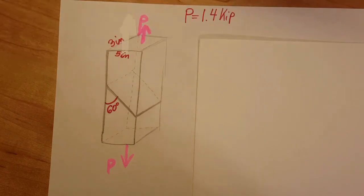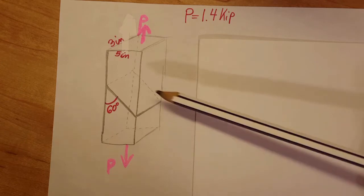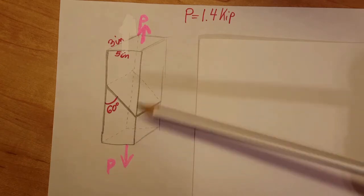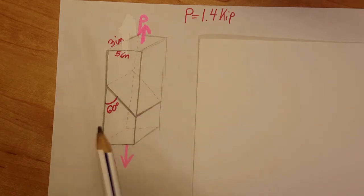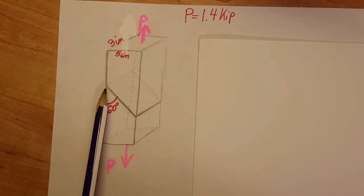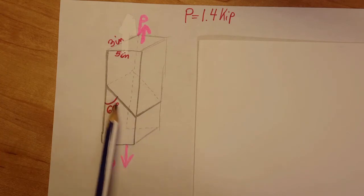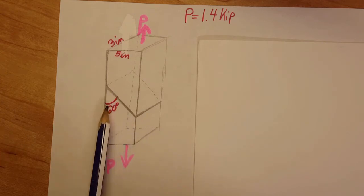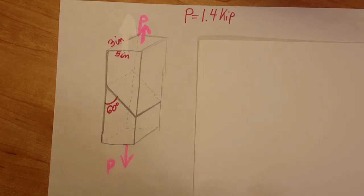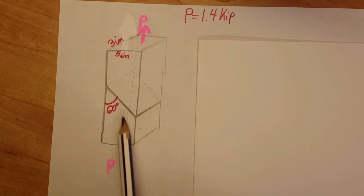This is a strength of materials problem where we have two pieces of wood that are glued together at an angle of 60 degrees. We want to find the normal stress and the shearing stress at the glue splice.